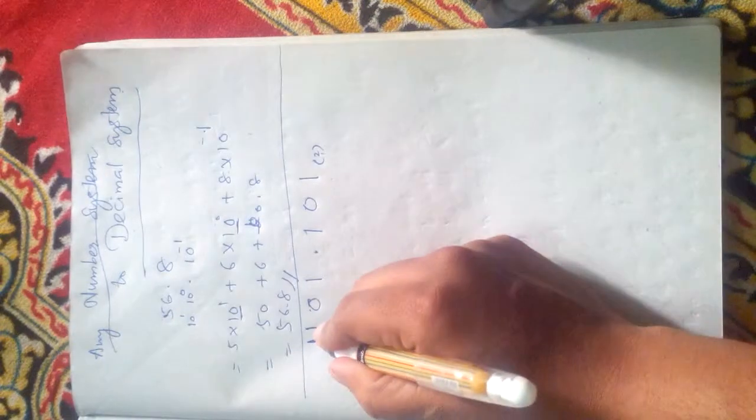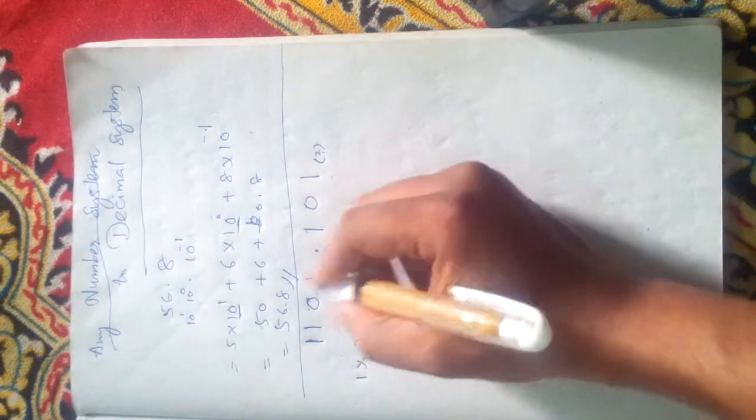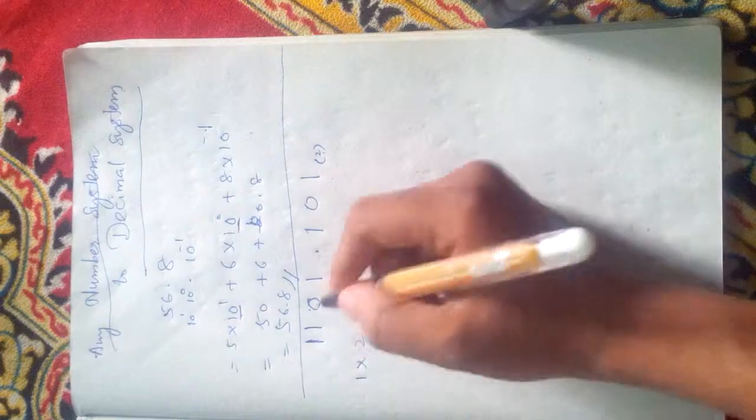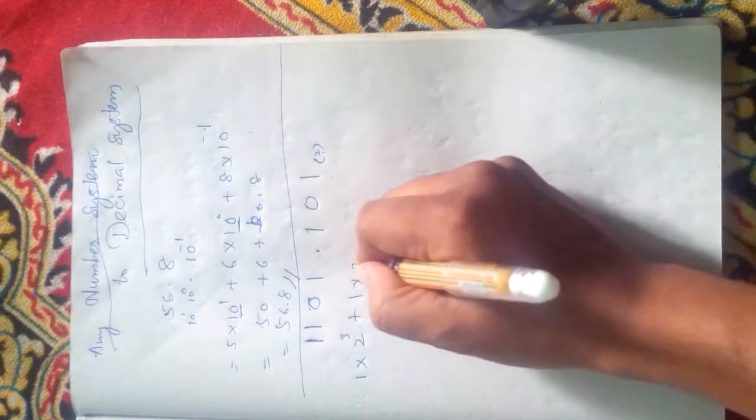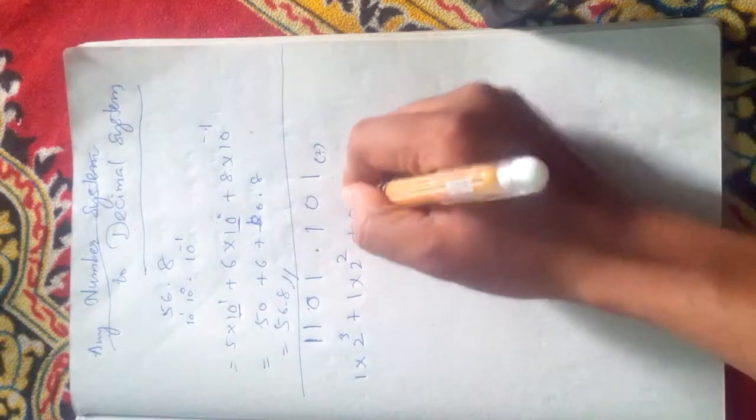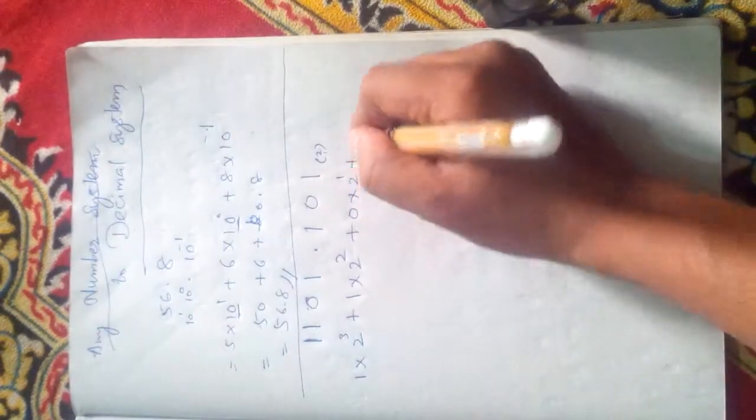1 into 2 raised to 3 plus 1 into 2 raised to 2 plus 0 into 2 raised to 1 plus 1 into 2 raised to 0